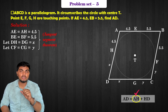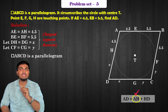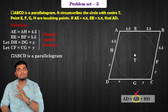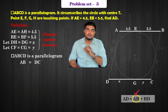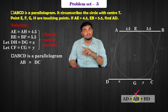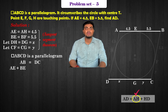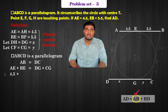We need the value of HD, meaning we need the value of x. To find x, since quadrilateral ABCD is a parallelogram, opposite sides are equal. So AB is equal to DC. AB equals AE plus EB, which gives us x plus y equals the same as DG plus GC. So 4.5 plus 5.5 equals x plus y.